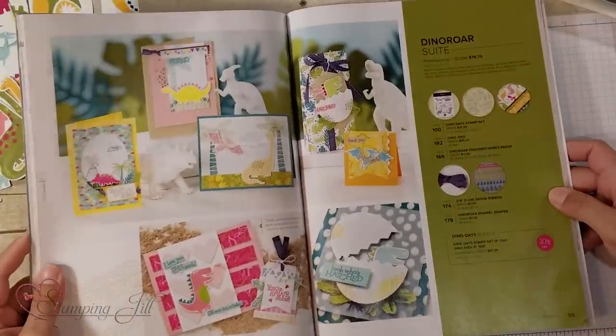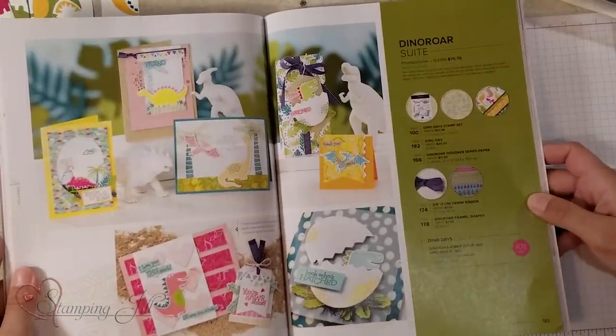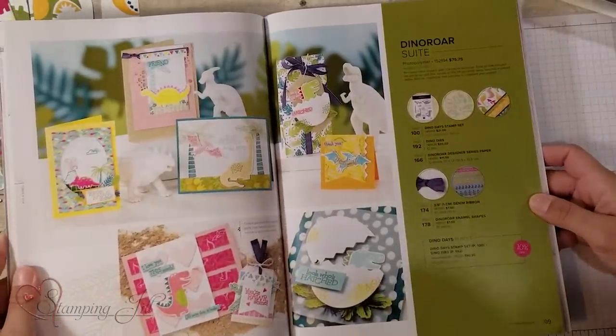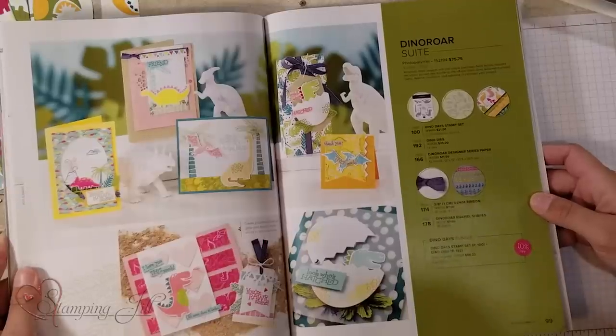It is the Dino Roar Suite. So fun. I think this could be really cute for little kids, but also really fun for adults. It can be used as masculine, but it also has some really cute colors in the paper that you can pull in to make it really girly and fun.